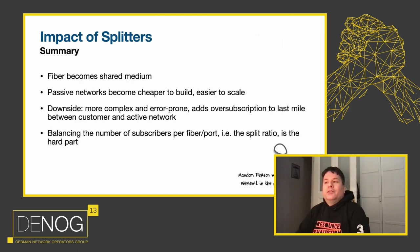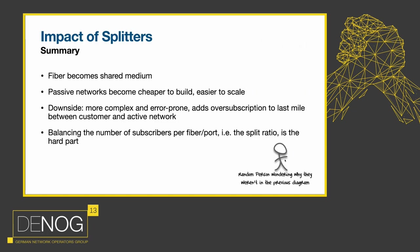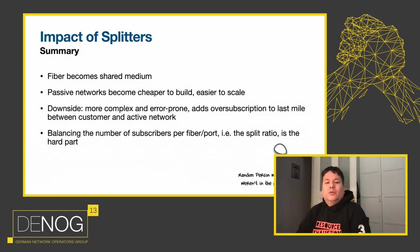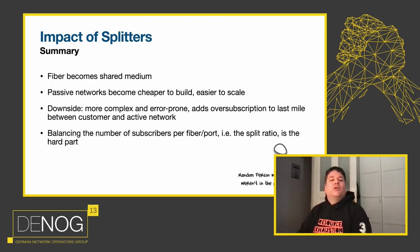As a summary for the impact of splitters: the fiber becomes a shared medium — that's one downside. On the other hand, the passive network becomes cheaper to build, easier to scale, easier to handle, and easier to operate. It also becomes more complex and more error-prone because you're adding multiple stations to one fiber strand — if one doesn't behave, you need to figure out which one and remove it. You're adding oversubscription to the last mile. The split ratio is about balancing the number of subscribers per fiber and port, and that's the really hard part when building these networks.